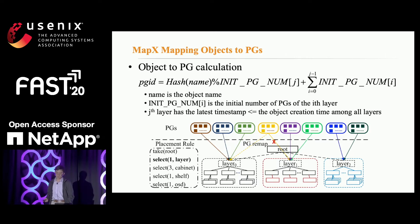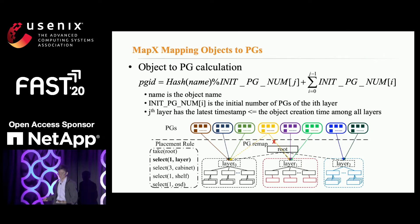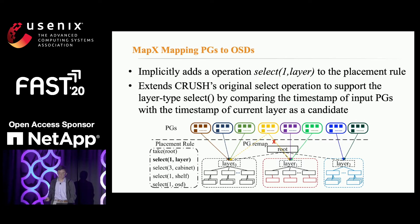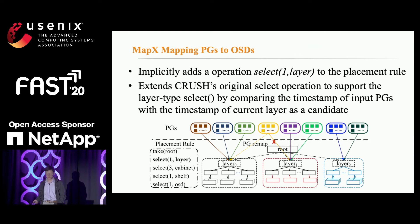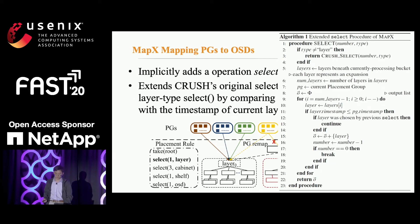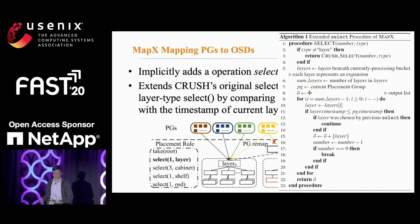Consequently, each object is mapped to a responsible PG during creation, which has the latest timestamp T_PGs less than or equal to T_O among all PGs. Similar to CRUSH, MapX maps a PG onto a list of OSDs following a sequence of operations in a user-defined placement rule. MapX implicitly adds a select operation — select one layer — to the placement rule, in order to realize this time dimension mapping from PGs to layers without disturbing administrators. MapX extends CRUSH's original select operations to support the layer type of select.